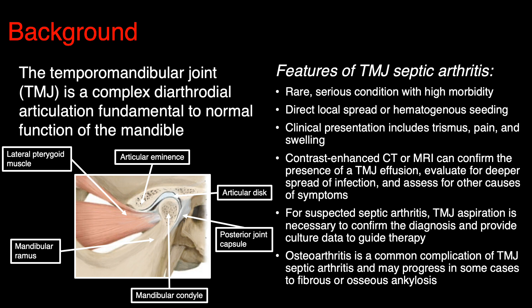Presenting clinically, patients usually have trismus, localized pain, and swelling. Workup can include cross-sectional imaging such as contrast-enhanced CT or MRI. This can play a critical role to confirm the presence of a TMJ effusion, to look for deeper spread of infection including abscess formation, bony involvement such as osteomyelitis, as well as evaluating for other potential causes of these symptoms. When septic arthritis is suspected, aspiration is critical, both to confirm the diagnosis and provide culture data to guide ongoing antibiotic therapy.